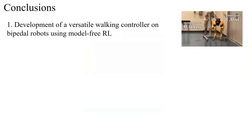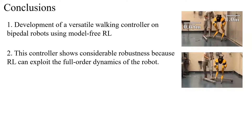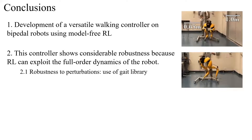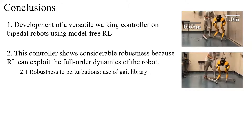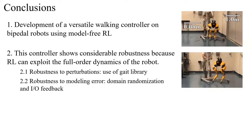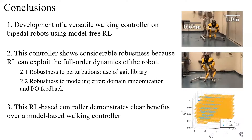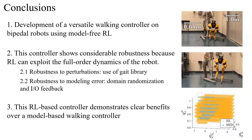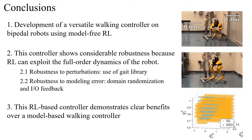In conclusion, we developed a versatile walking policy using deep reinforcement learning to enable the 3D bipedal robot CASI to walk while following commands for frontal and lateral walking speed, walking height, and turning yaw rate — all using a single policy. The controller shows considerable robustness through two methods: first, combining a hybrid zero-dynamics-based gait library to enable training on diverse motions and transitions; and second, using domain randomization combined with system input-output feedback to improve robustness to modeling errors and environmental changes. This is one of the first times an RL-based walking policy shows clear benefits over model-based walking controllers, with the key advantage being that RL can leverage the full-order dynamics of the system to produce more agile behaviors.